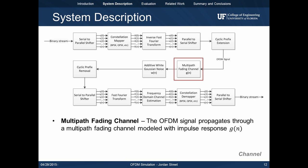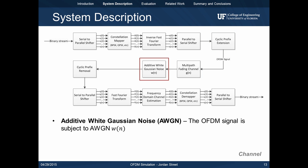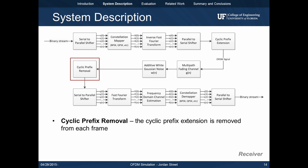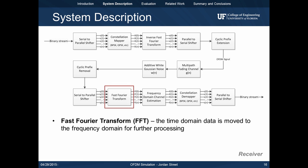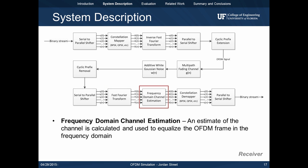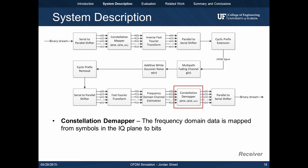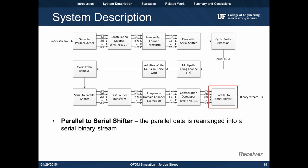Now the OFDM signal is subject to a multipath fading channel, in addition to additive white Gaussian noise. At the receiver end, the cyclic prefix is removed. The data is shifted into parallel blocks for processing. Now the fast Fourier transform is used to shift the data into the frequency domain. Once in the frequency domain, channel estimation is applied. In our case, least squares estimation is used. The data is then demodulated using the same modulation scheme in the receiver, shifted from symbols to bits, and finally shifted from parallel blocks to a serial binary stream.